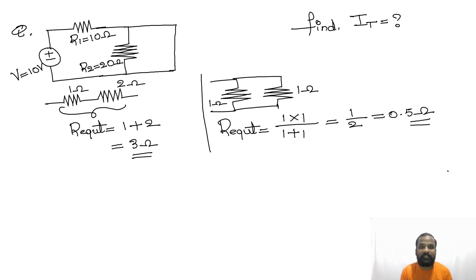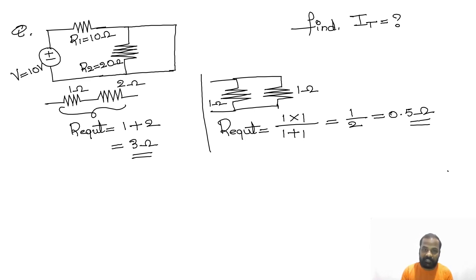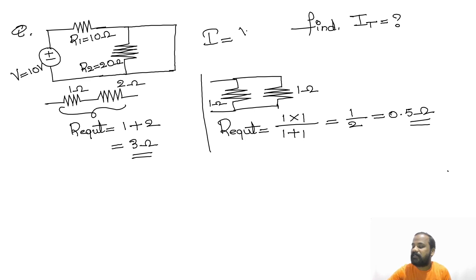Whenever a circuit consists of series and parallel combinations, you can easily find the equivalent resistance. After finding the equivalent resistance, you can directly use the formula I = V / R_equivalent to get the value of total current flowing in the circuit. This type of problem is very simple.